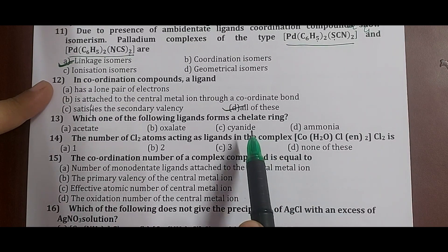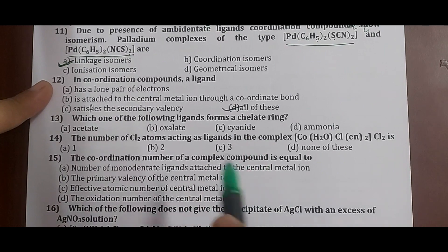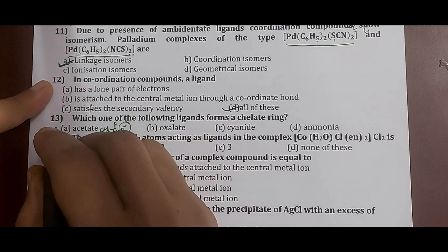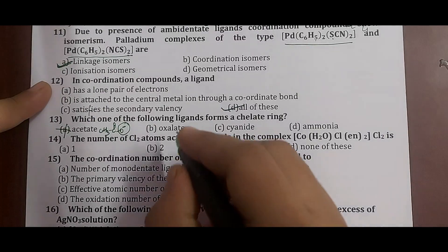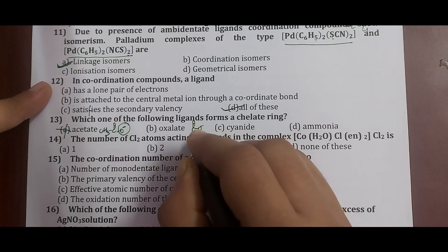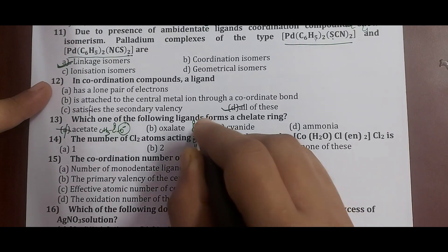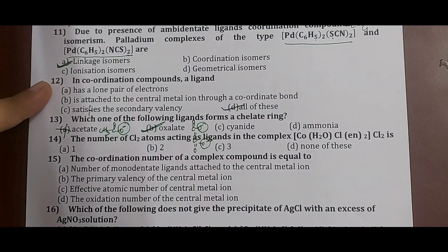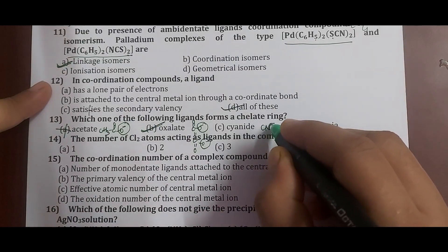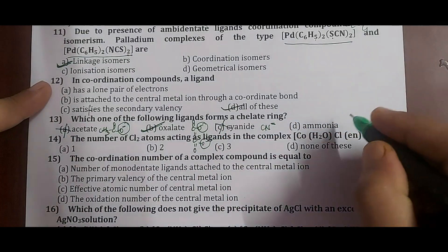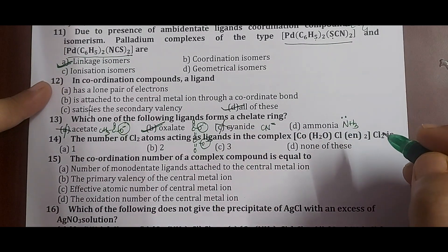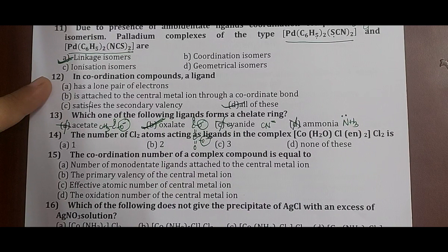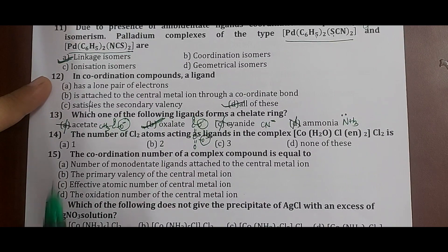Question 13: which ligand forms a chelate ring? A chelate ring requires a bidentate or polydentate ligand. Acetate has only one donor site — cannot chelate. Oxalate (C2O4²⁻) has two donor sites — can form a ring-like structure, so it is a chelating ligand. Cyanide and ammonia each have only one donor atom. Correct answer: option B, oxalato.